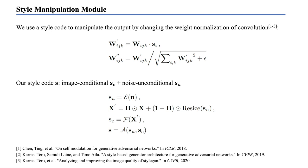Finally, for generating more diverse results, we introduce a style manipulation module. It uses a style code to manipulate the output by changing the weight normalization of convolution layers. We also insert noise into the image-conditioned style to further enhance the diversity of generation.